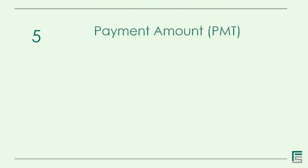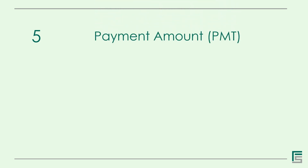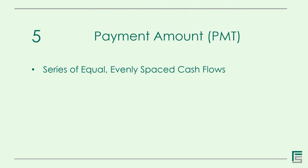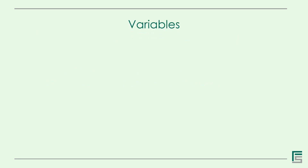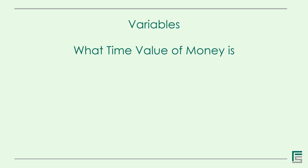The fifth variable is the Payment Amount. These are a series of equal, evenly spaced cash flows. This can be calculated with any of the four variables stated before. With these variables, we end our discussion on what time value of money is and move on to how to calculate it.